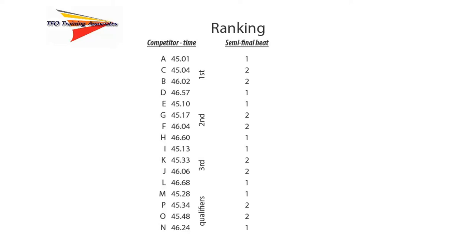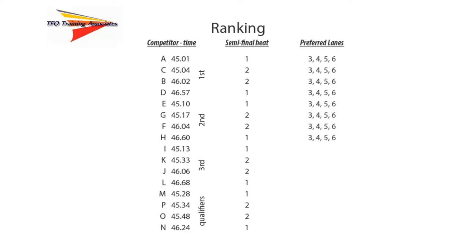Once the competitors have been assigned to a heat, they are next assigned to lane groups. The fastest four qualifiers in each semifinal will compete in the preferred lanes — in this case lanes 3, 4, 5, and 6. The 5th and 6th fastest will compete in lanes 7 and 8, and the final two qualifiers will be in lanes 1 and 2.